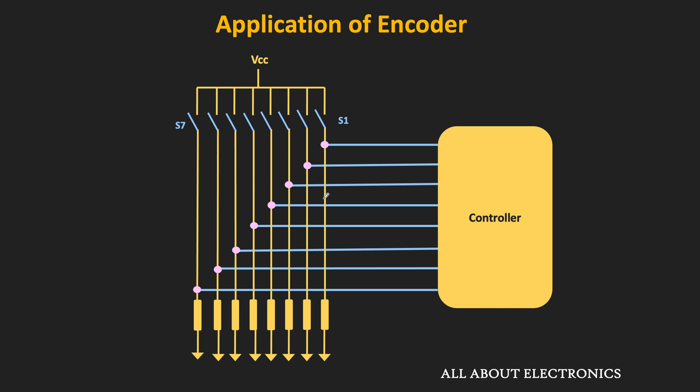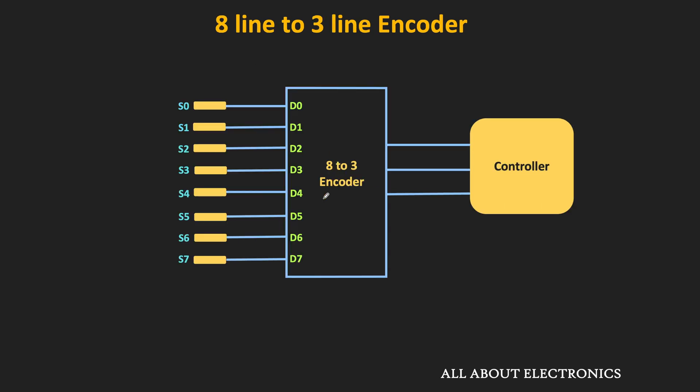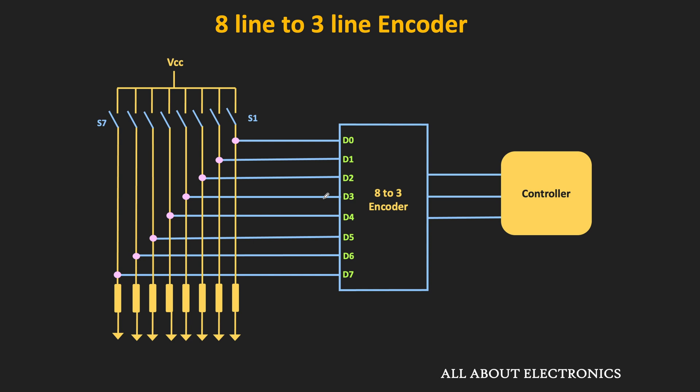Without an encoder, connecting 8 switches requires 8 IO pins on the controller. While modern controllers have many IO pins, you can run out when connecting many inputs. Using an encoder, we connect the 8 switches to its inputs, and the encoder output goes to the controller. Depending on which key is pressed, a specific code appears at the encoder output, and the controller reads that code to identify the key. This reduces the required pins from 8 down to just 3, saving IO pins — one of the key uses of a binary encoder.